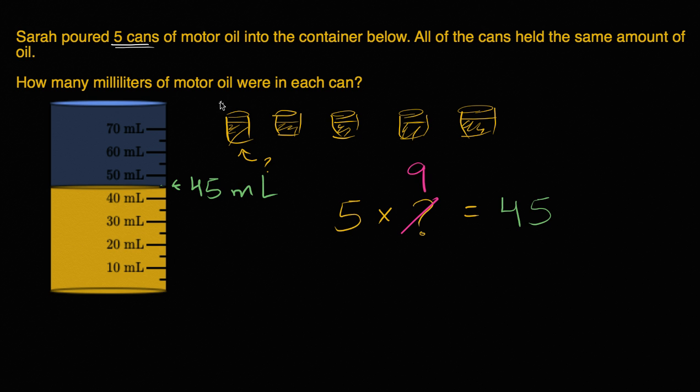So Sarah had nine milliliters in each can. They each had the same amount. They say that all of the cans held the same amount of oil. So if you had nine milliliters in each one, notice, in each of the five cans, you had nine milliliters. Five times nine is 45. So she had nine milliliters of motor oil in each can.